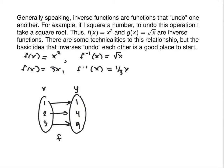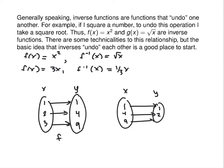The function f inverse takes that and reverses it. The x's are now 1, 4, and 9. And 1 is paired with 1, 4 is paired with 2, 9 is paired with 3 — that's the inverse. So if I take 2 to 4, the inverse takes 4 to 2. In that case, the operation I chose was to square and then square root.